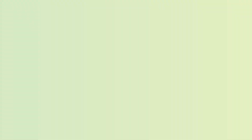One example of a chiral drug right now is ketoprofen. Ketoprofen is a very common anti-inflammatory whose mechanism of action is the inhibition of the production of prostaglandin. It's also racemic. The S-enantiomer of ketoprofen, also known as dexketoprofen, exhibits 160 times more potency when talking about bioavailability than the R-enantiomer.